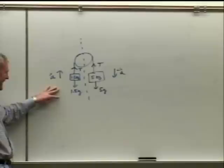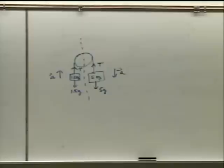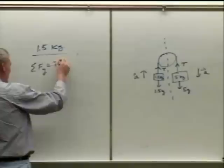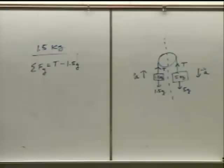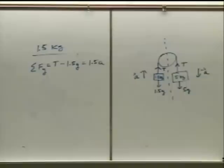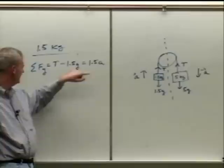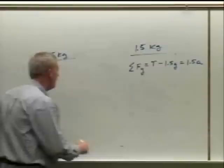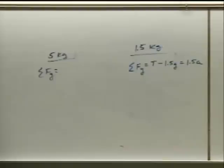Rearranging the 5-kilogram equation: tension equals 5g minus 5a. Substituting into the 1.5-kilogram equation: 5g minus 5a minus 1.5g equals 1.5a. Simplifying: 3.5g equals 6.5a, so a equals 3.5g divided by 6.5.